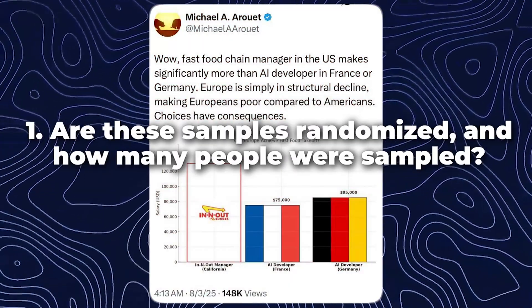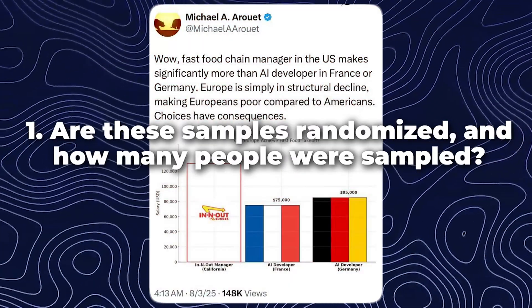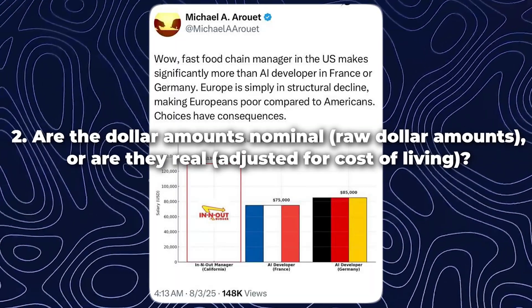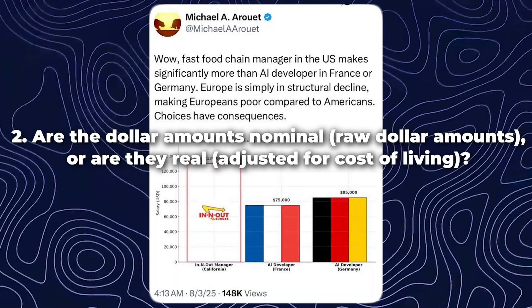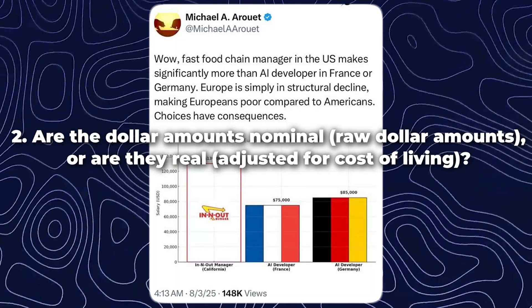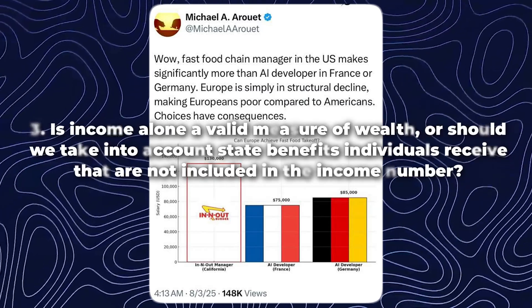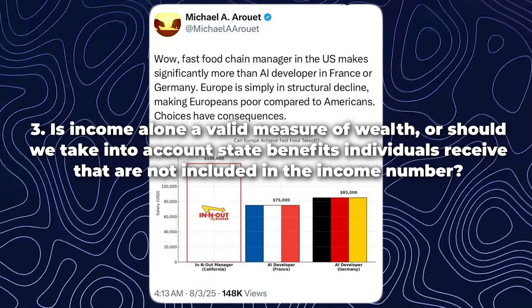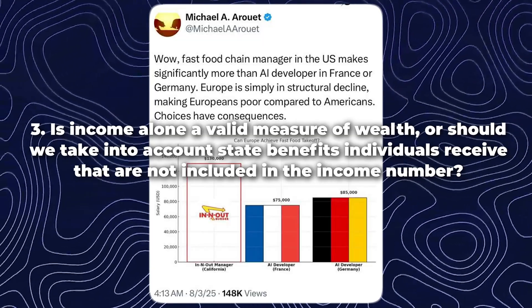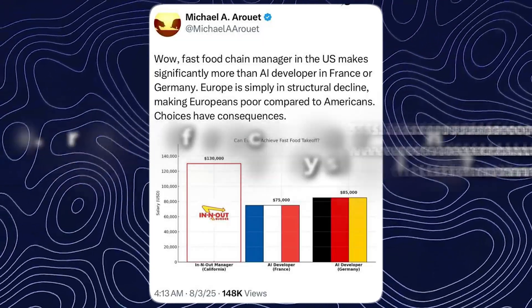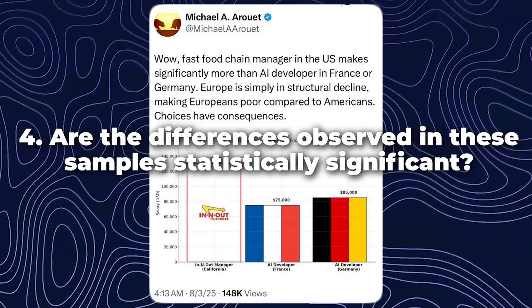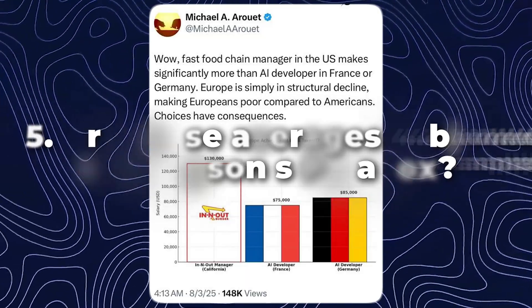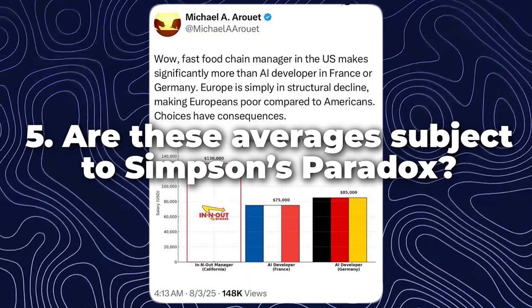These are questions you can apply to pretty much every claim of this type posted online. One: are these samples randomized and how many people were sampled? Two: are the dollar amounts nominal, as in raw dollar amounts, or are they real, as in adjusted for cost of living? Three: is income alone a valid measure of wealth, or should we take into account state benefits individuals receive that are not included in the income number? Four: are the differences observed statistically significant? And five: are these averages subject to Simpson's paradox?